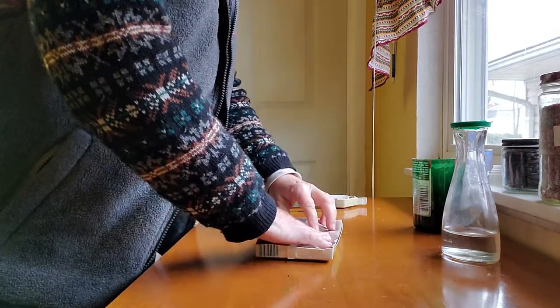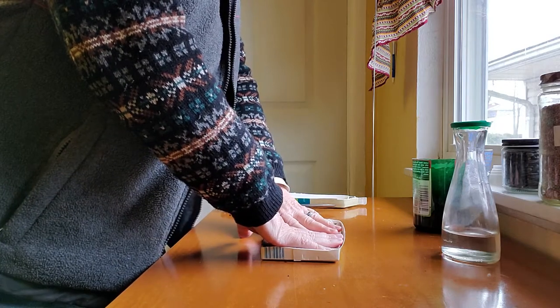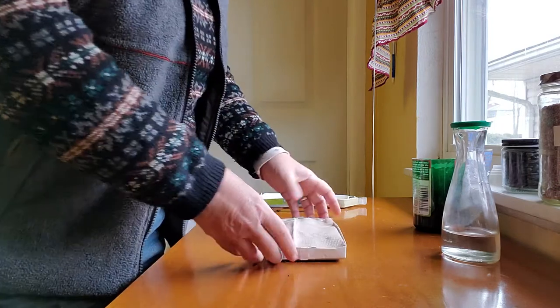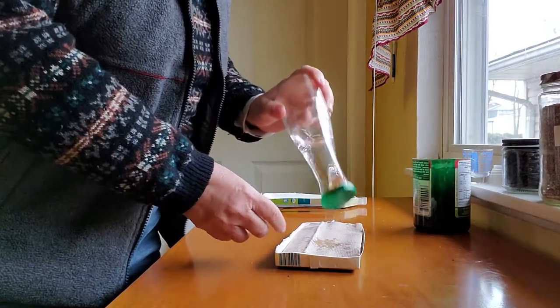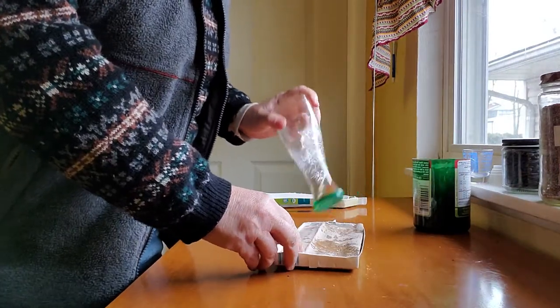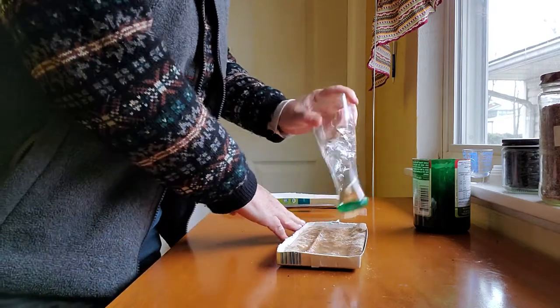So I've got soil, quarter inch of soil maybe, covered by paper towel. Then I sprinkle it to start to moisten it. It'll take a while to get it well moistened.